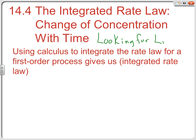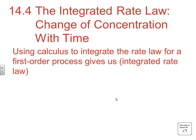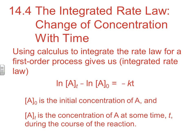That's the key, because in order to understand whether it's zero order, first order, or second order, what we're really doing is trying to find which situation gives us a linear relationship — whether it's the zero order, first order, or second order graph. To do that, we take calculus to derive a separate equation from our differential rate law. This is our Integrated Rate Law equation.